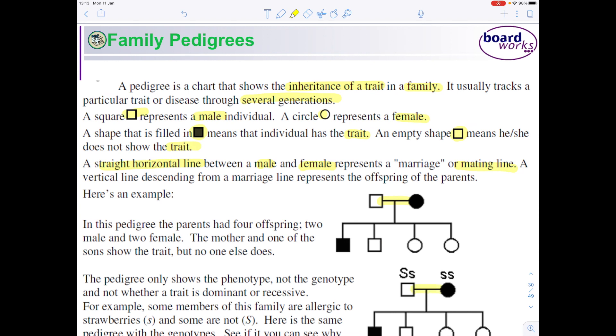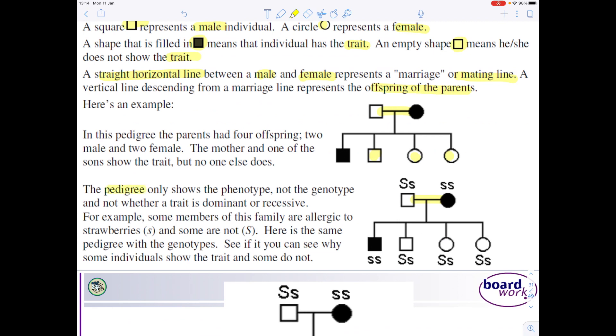And then a vertical line descending from that line represents the offspring. So we can see in this first example that they have four children, two of those children are male, two are female. Notice that the mother up here and the firstborn son over here have the particular traits. It's important to notice that the pedigree only shows the phenotype, not the genotype.